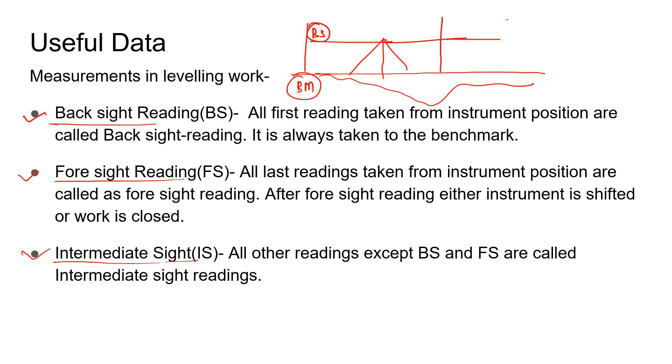If we have kept a staff here, that reading would be termed as intermediate sight reading. The last reading would be foresight reading. At foresight reading, we either change the instrument or close the work.